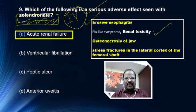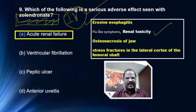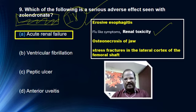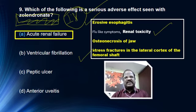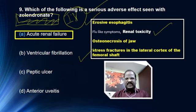So before and after using zoledronic acid, you should definitely do a renal function test, because zoledronic acid carries risk of causing nephrotoxicity. Rarely, zoledronic acid may cause osteonecrosis of the jawbone. And sometimes on chronic use, it causes stress fracture of the lateral cortex of the femoral shaft. Remember, the most serious adverse effect of zoledronic acid is renal toxicity — acute renal failure.